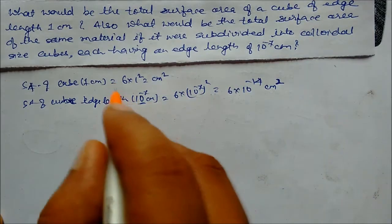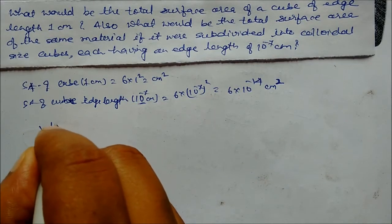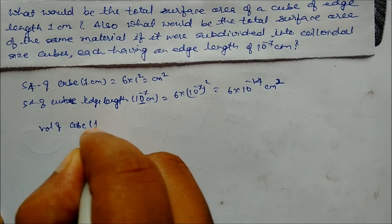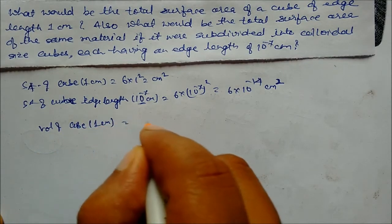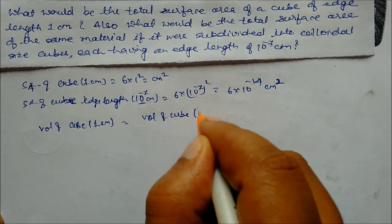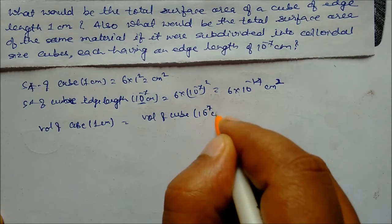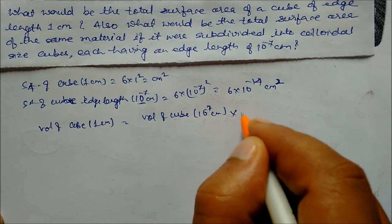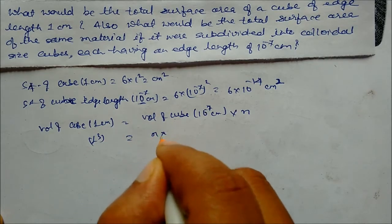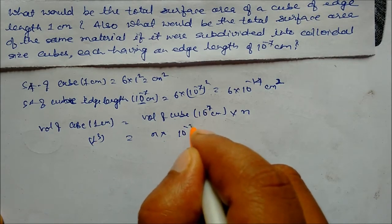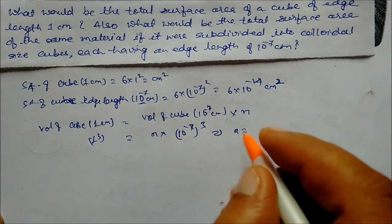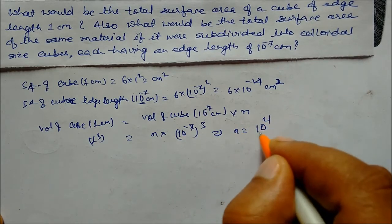Now volume of the large cube equals volume of n small cubes. Volume of 1 cm cube equals n into (10⁻⁷)³. So 1 cubed equals n into 10⁻²¹, which implies n equals 10 to the power 21.